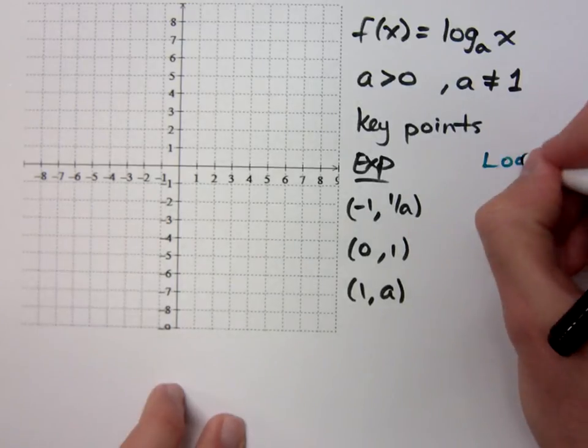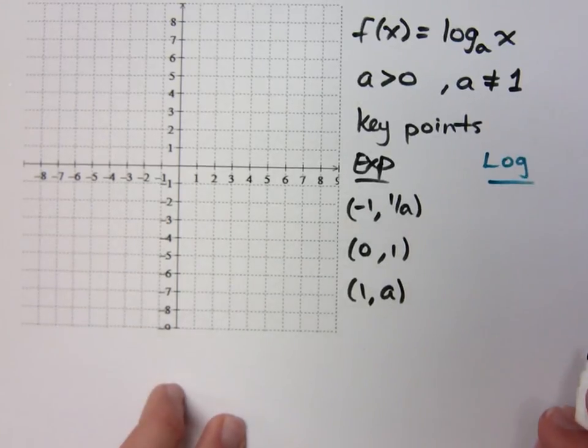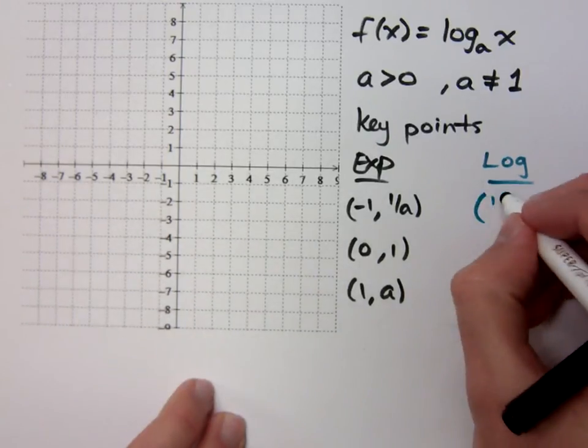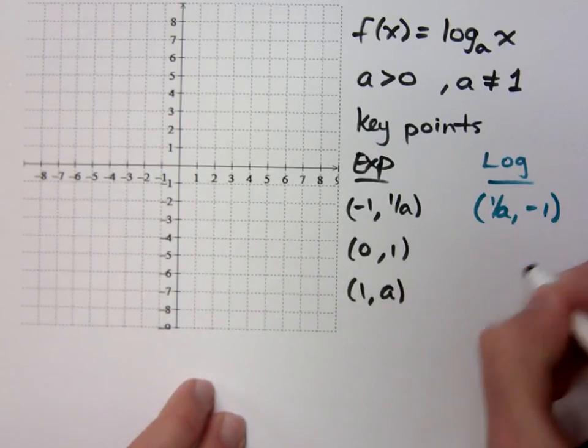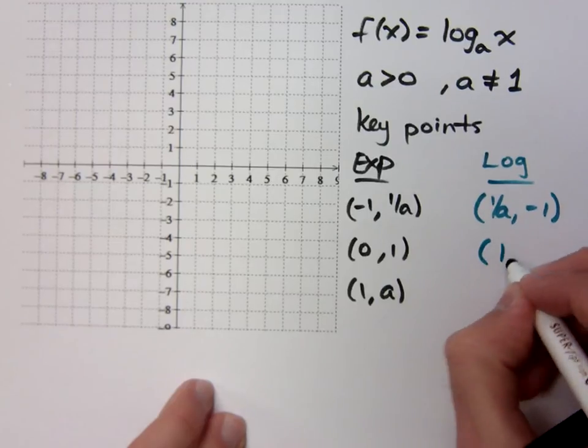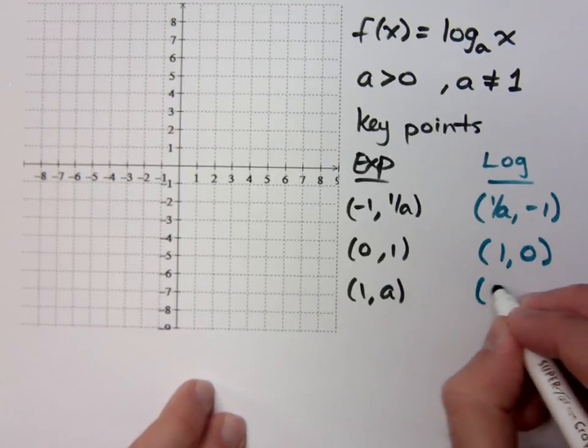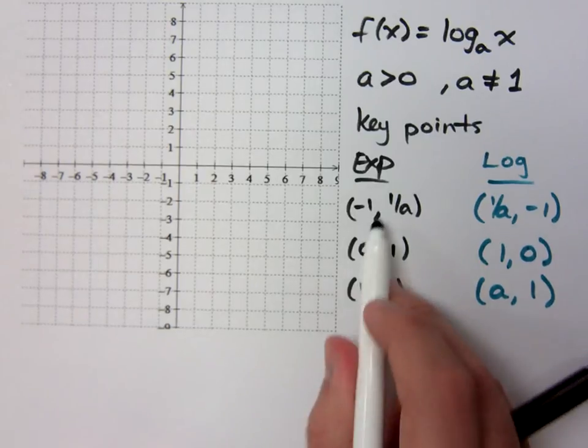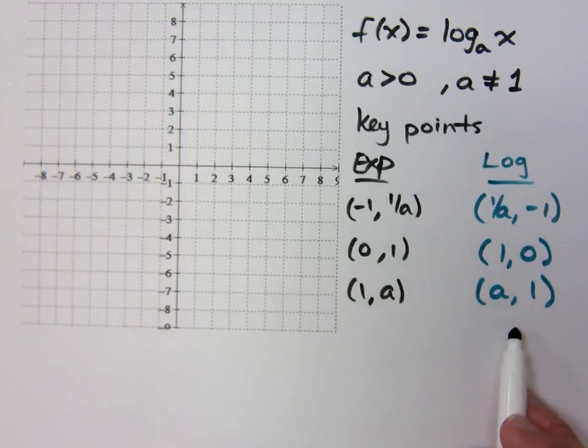For your logarithmic function, I said it's the inverse, right? The major key points will be this: 1 over A, negative 1; 1, 0; and A, 1. So exponential, this is what you had. This is what it will be for the log.